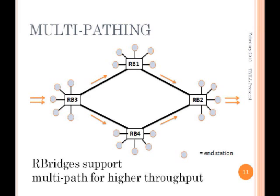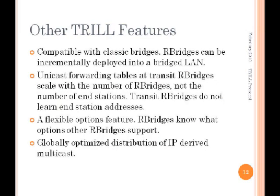The basic way Trill manages to do that: these circles shown are end stations. When a native frame from an end station first arrives — say at RB3 — it gets encapsulated, so the original frame is preserved inside. Another header is added that has a hop count and other addresses, and those are manipulated in a standard router way as it goes hop-by-hop through your R-Bridge campus.